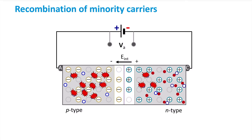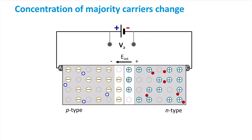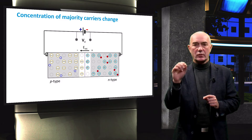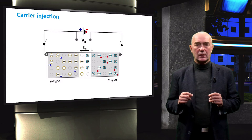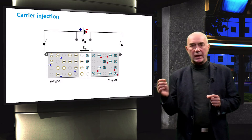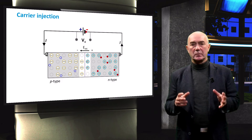Since a significant concentration of majority carriers in the quasi-neutral regions will recombine, this will lead to a new state that is different from thermal equilibrium. This new situation is visualized and exaggerated using the bonding model. The concentration of majority carriers in the quasi-neutral region is smaller than the concentration of ionized dopants. Our diode naturally tends to return to its original state, in which the concentration of majority carriers equals the concentration of ionized dopants.